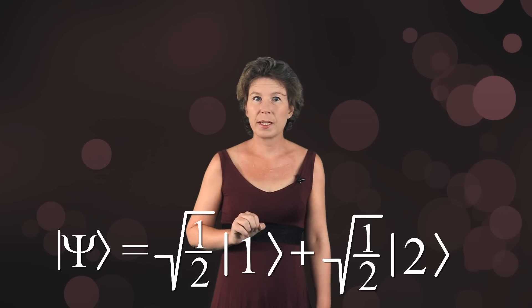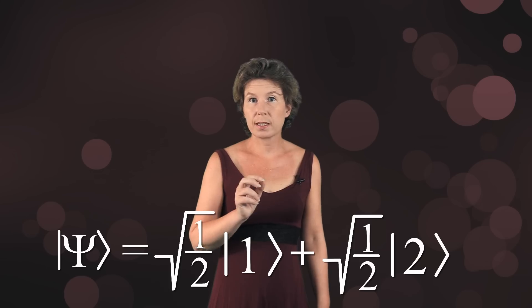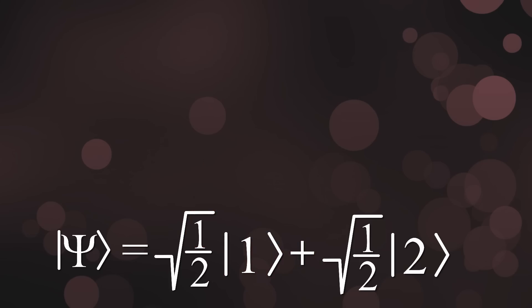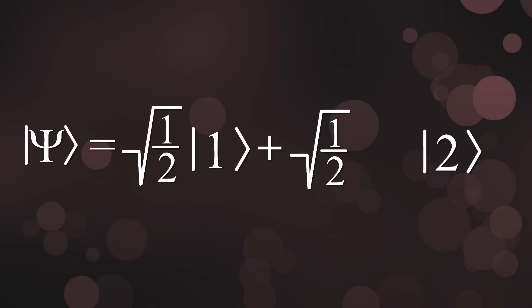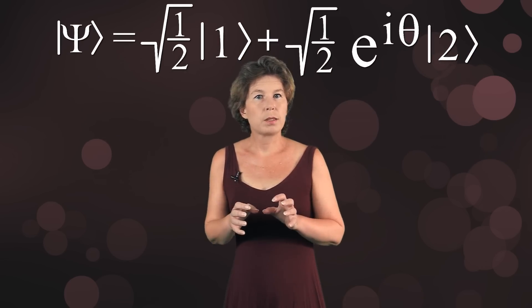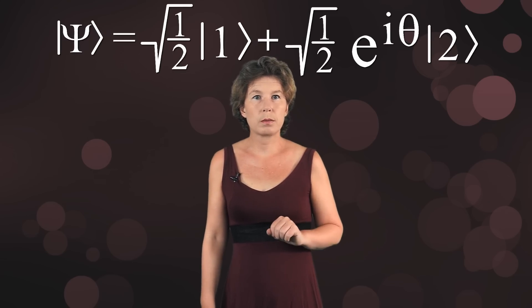But this is quantum mechanics, so let us not forget that the coefficients are complex numbers. To take this into account we will put in another factor here, which is a complex number with absolute value equal to one. We can write any such complex number as e to the i times theta, where theta is a real number. The reason for doing this is that such a complex number does not change anything about the probability of getting one of the two measurement outcomes.